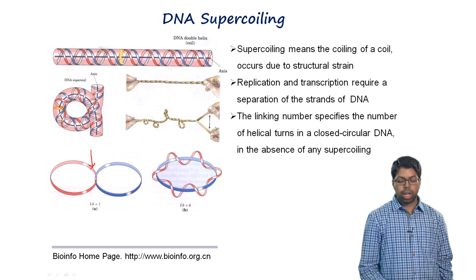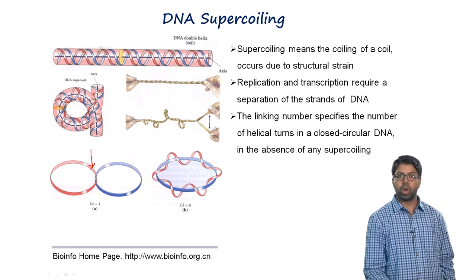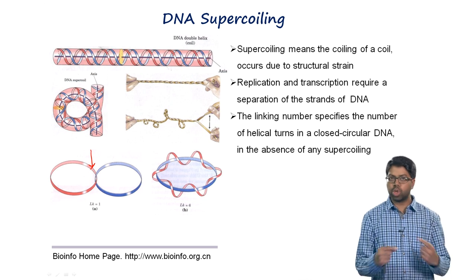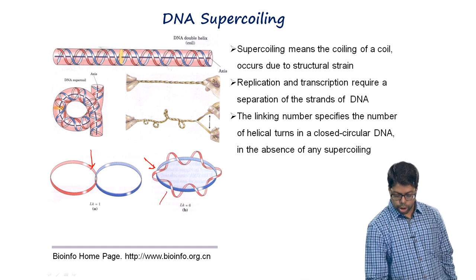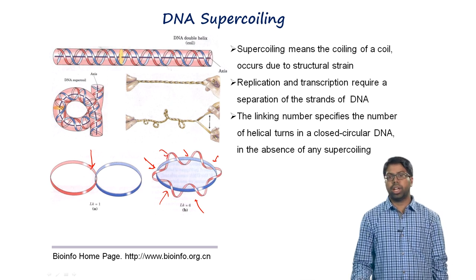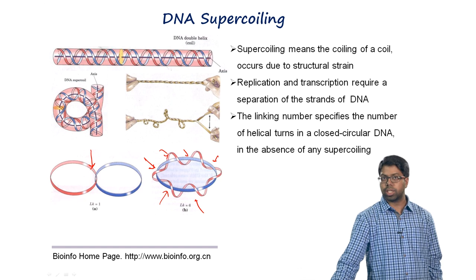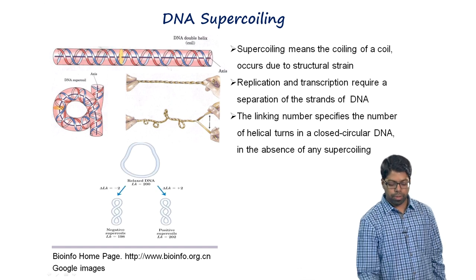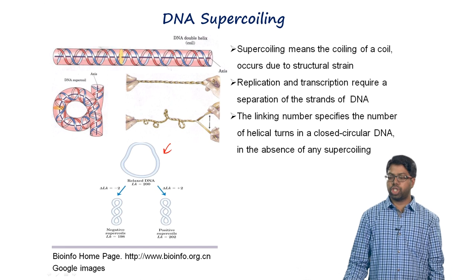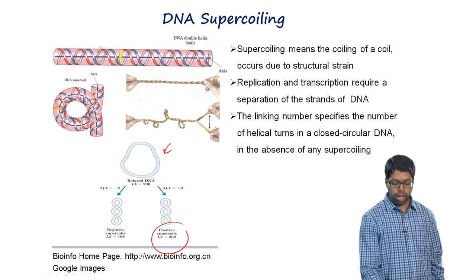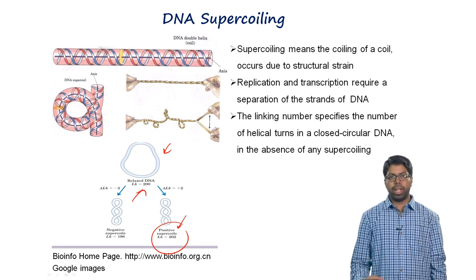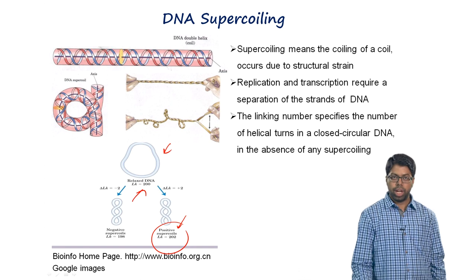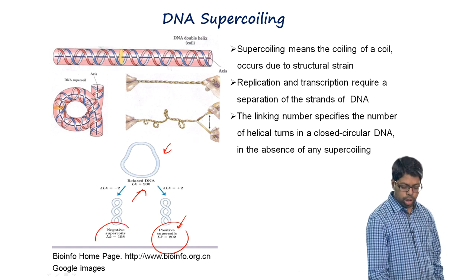For example, if twist is 1 and there is no writhe, the linking number is 1. In another example with 6 helical turns and no writhe, the linking number is 6 — this is relaxed DNA. If the linking number is greater than that of the relaxed state, the DNA is positively supercoiled; if less, it is negatively supercoiled.